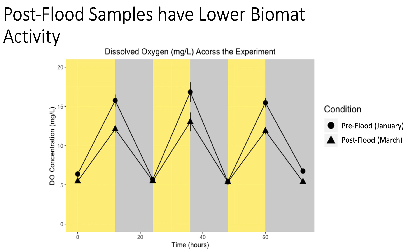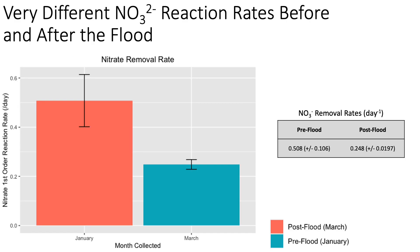As a result of the flood event, diel shifts in the concentration of dissolved oxygen were smaller in post-flood biomat microcosms, seen here as triangles, versus those with pre-flood biomat in circles. This appears to demonstrate that the photosynthetic activity of the post-flood biomat was lower than that of the pre-flood biomat. The batch microcosm showed that the ability of an open-water wetland to remove nitrate will likely be degraded following a flooding event — in this case, the reaction rate is approximately half of the pre-flood rate. This demonstrates that an open-water wetland has the potential to continue removing nitrate if returned to service quickly.